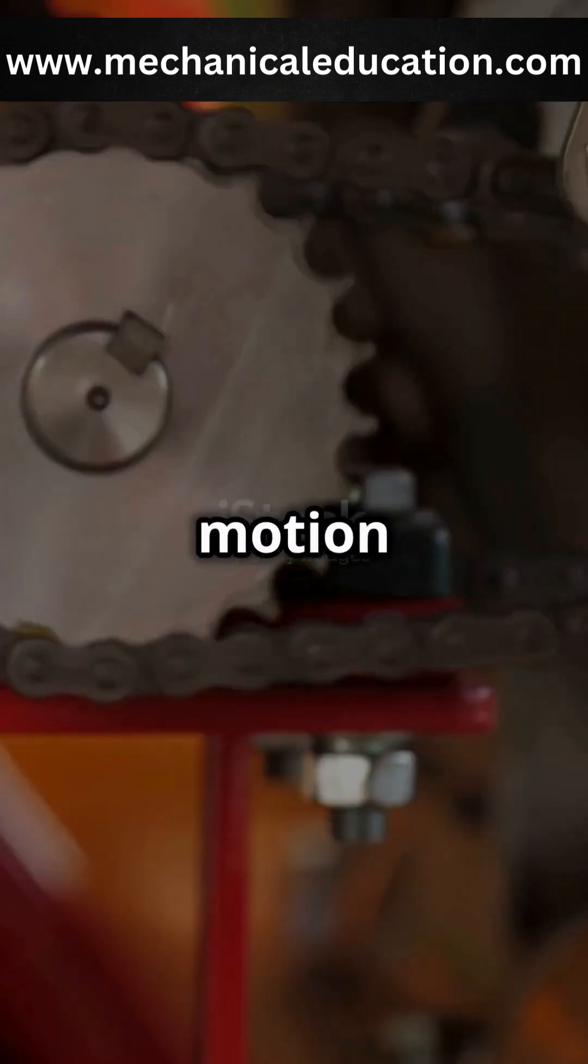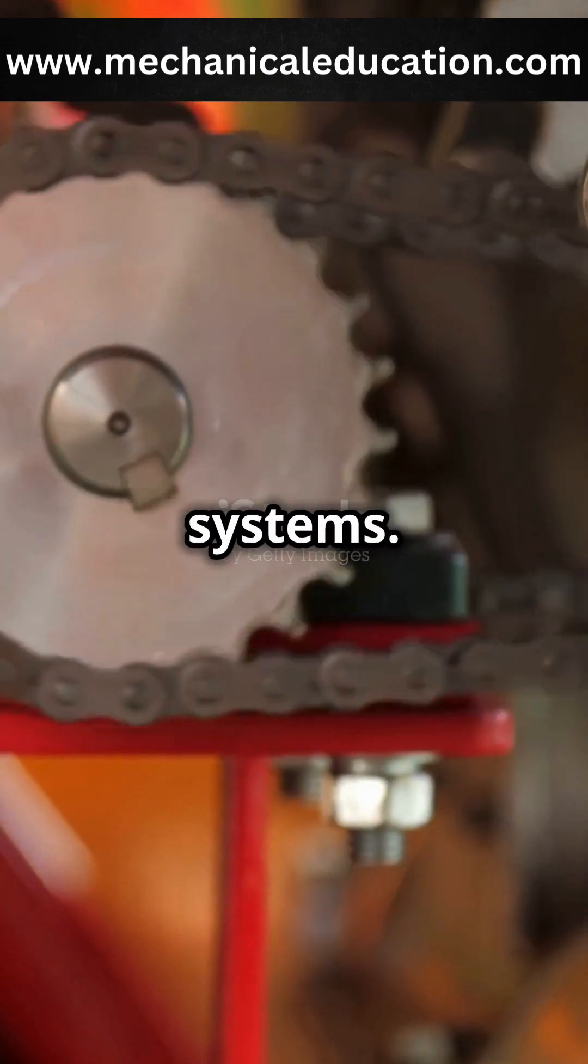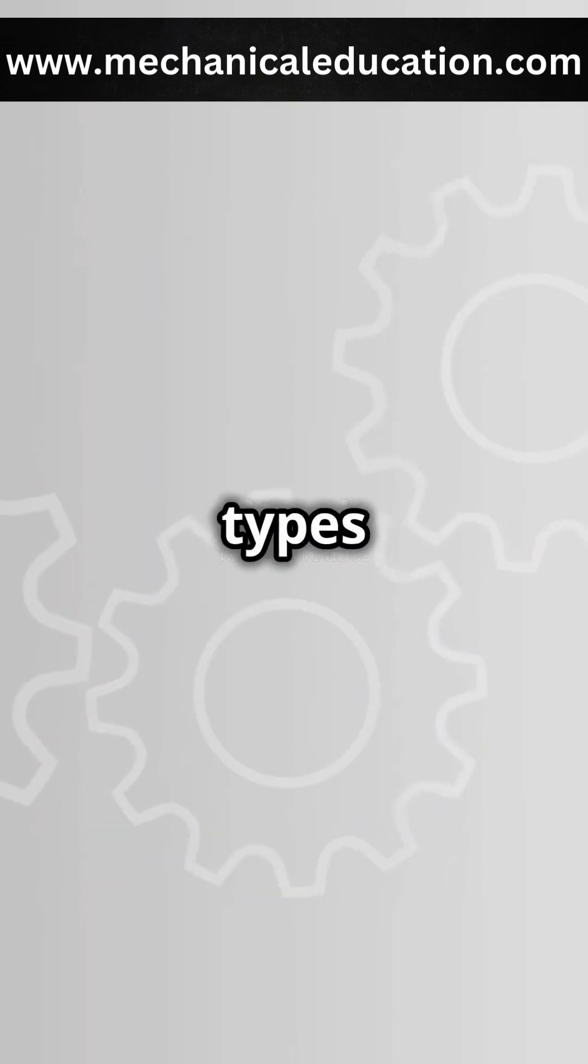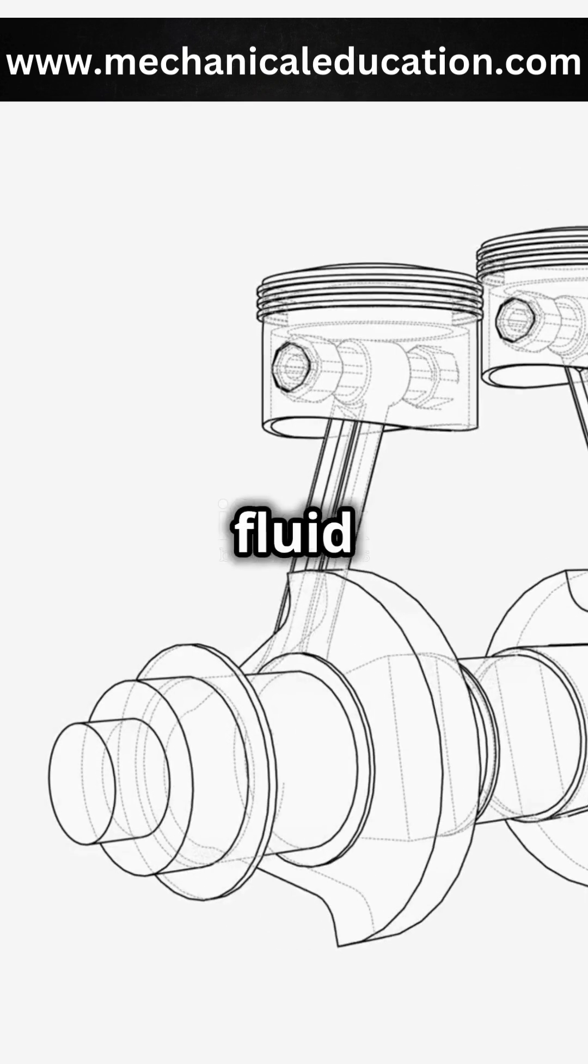Mechanism links are the backbone of motion transmission in mechanical systems. Today, let's explore three key types: flexible, rigid, and fluid links.